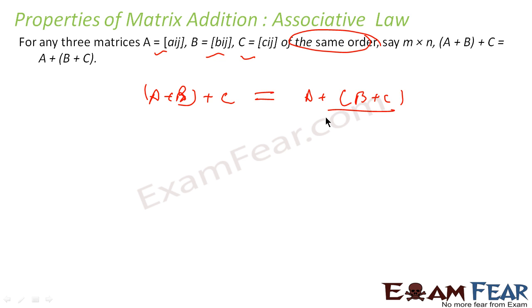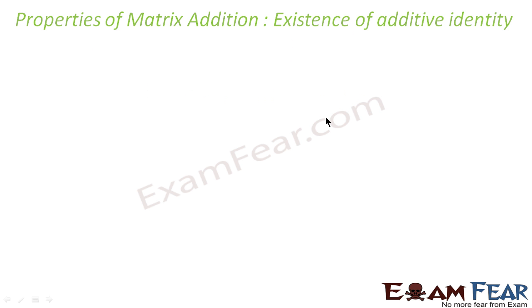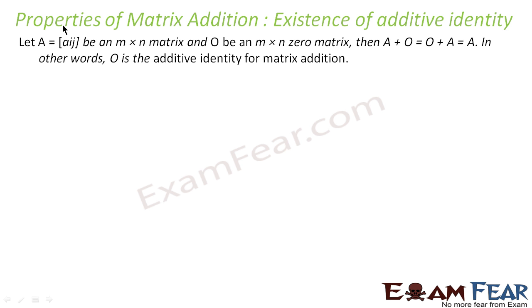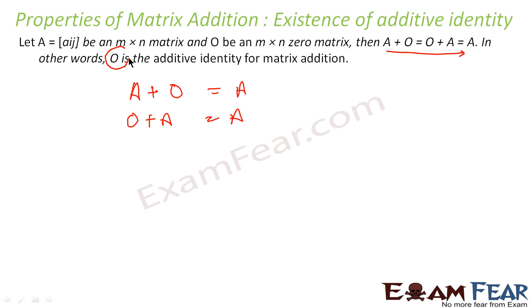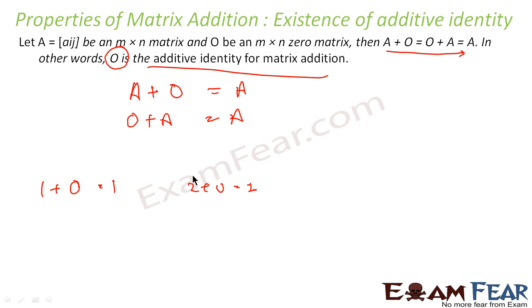The existence of additive identity says that if there is a matrix A and zero is a zero matrix, then A plus zero equals zero plus A equals A. That means if you add a zero matrix to any matrix A, you always get A. So the zero matrix is the additive identity for matrix addition, just as zero is the additive identity in normal arithmetic.